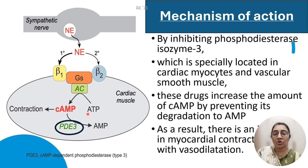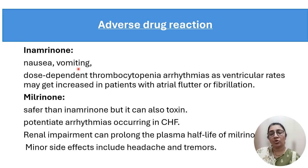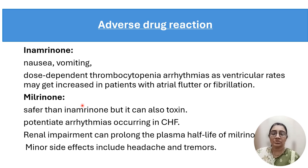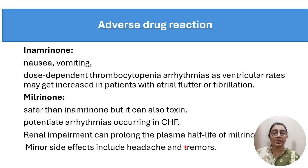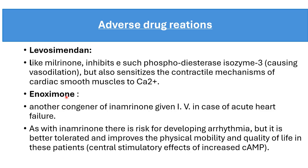The increase in cyclic AMP concentration in cardiac and vascular smooth muscle causes increased myocardial contractility and vasodilation. Adverse effects of inamrinone include nausea, vomiting, dose-dependent thrombocytopenia, and arrhythmia. Ventricular rate may increase in patients with atrial flutter and fibrillation, making it a toxic drug. Milrinone is also toxic but lesser than inamrinone, so it is safer. It can potentiate arrhythmia in CHF patients, and renal impairment prolongs the plasma half-life of milrinone. Minor side effects include headache and tremor.